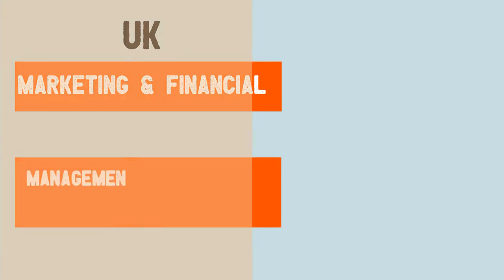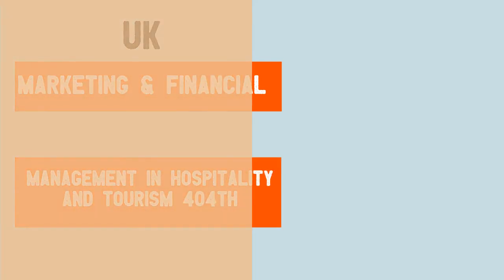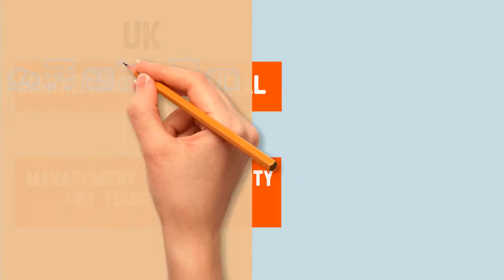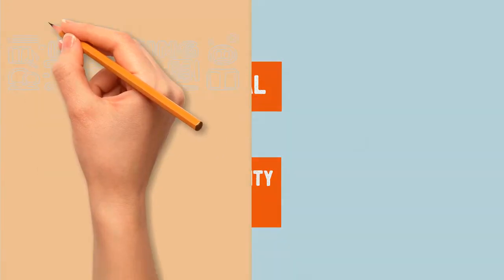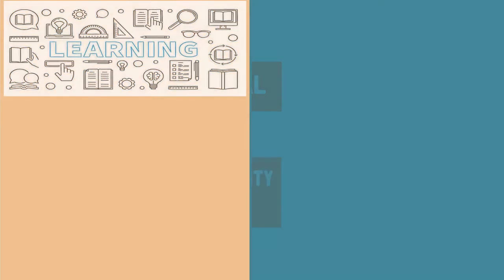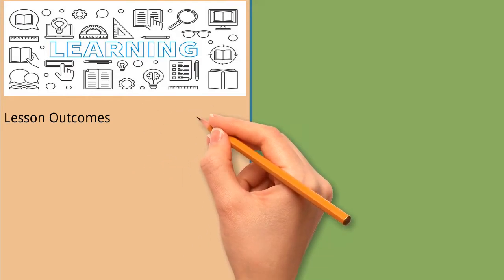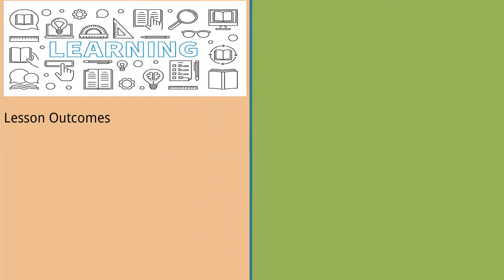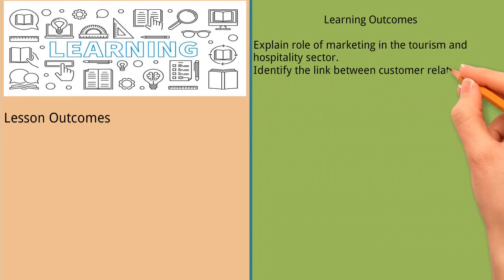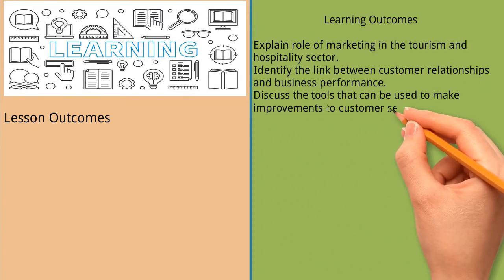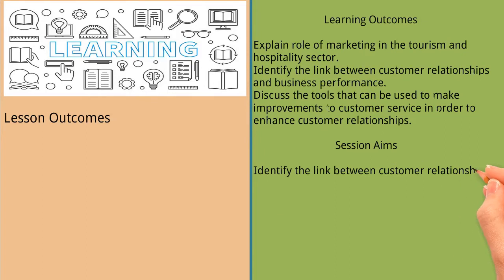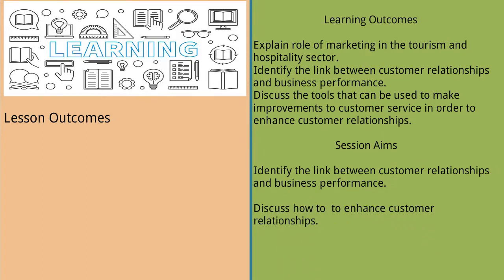Hi guys, this is Mr. Tan and we are looking at marketing and financial management in the hospitality and tourism industry. We're still in week one and we are now on lesson four, capturing value from customers. The learning outcomes today are to explain the role of marketing in the tourism and hospitality sector, to identify the link between customer relationships and business performance, and discuss the tools that can be used to make improvements to customer service in order to enhance customer relationships.